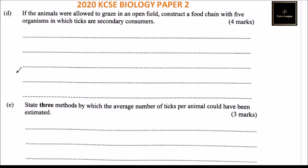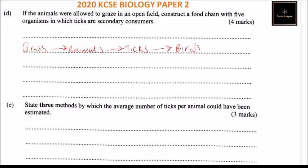Part D: if animals were allowed to graze in an open field, construct a food chain with five organisms in which ticks are secondary consumers. The food chain is: Grass → Animals → Ticks → Birds → Vulture. In this chain, ticks are the secondary consumers.